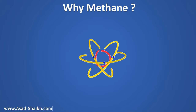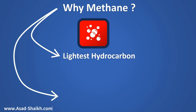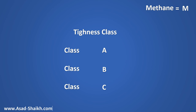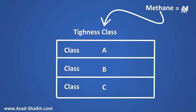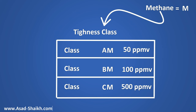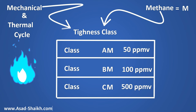Why is methane used as a test gas? Helium is understood as an inert gas, but methane is used because it is the lightest hydrocarbon, and one of the most fugitive-emission-prone industries is the hydrocarbon industry. If you can contain the lightest hydrocarbon, the other heavier gases can also be contained. Taking a practical example with methane as the test gas: the tightness requirement starts at 500 ppmv for Class C, then 100 ppmv for Class B, and finally Class A has the most stringent requirement of 50 ppmv. This testing must also be done through various mechanical cycles of on/off and thermal cycles of heating and cooling. After all this, your valve must maintain the required tightness class.